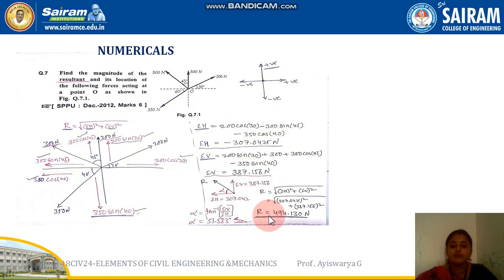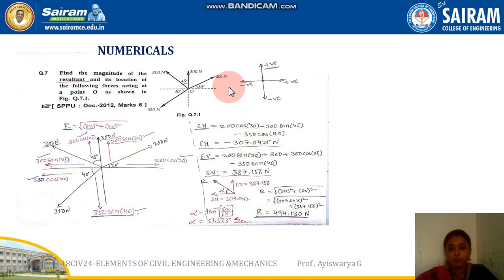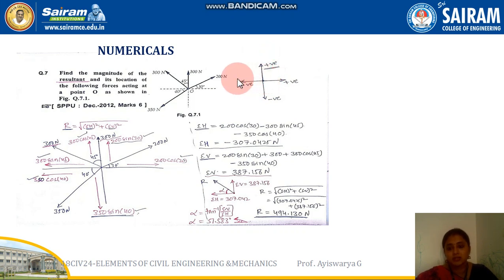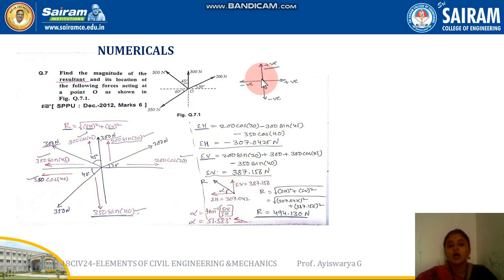After finding R, we also need to find alpha using alpha = tan⁻¹(ΣV / ΣH). From the calculation, ΣH is negative and ΣV is positive, which means the resultant lies in the second quadrant. The resultant is found at an inclination of 57.58 degrees in the second quadrant. This is how you solve these numericals.